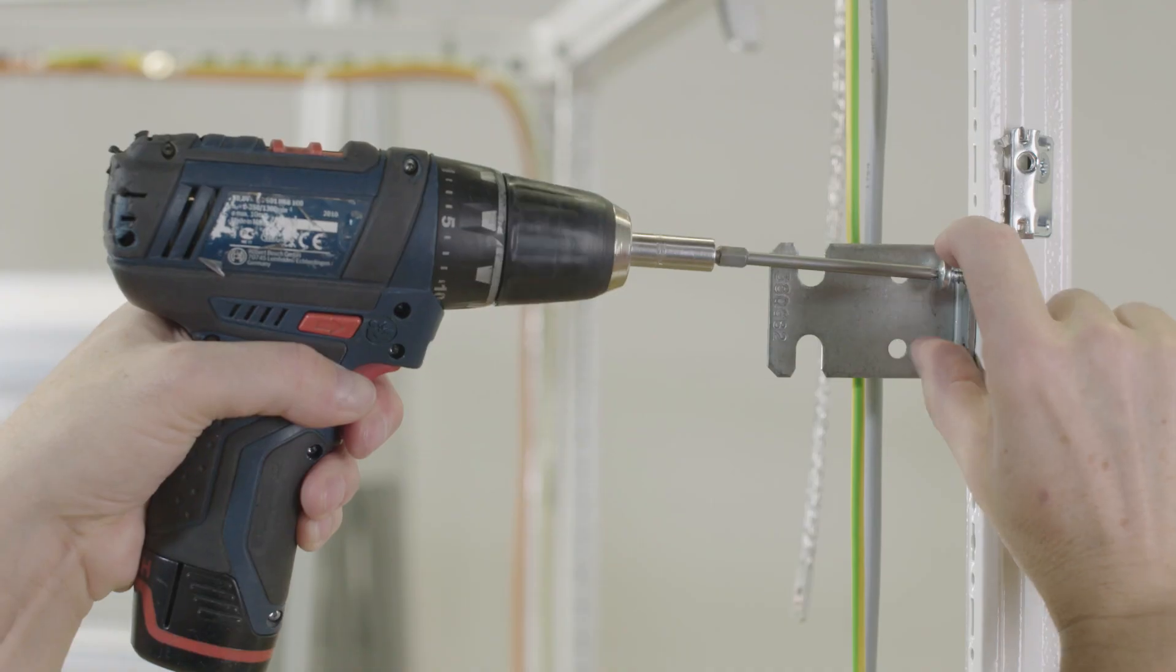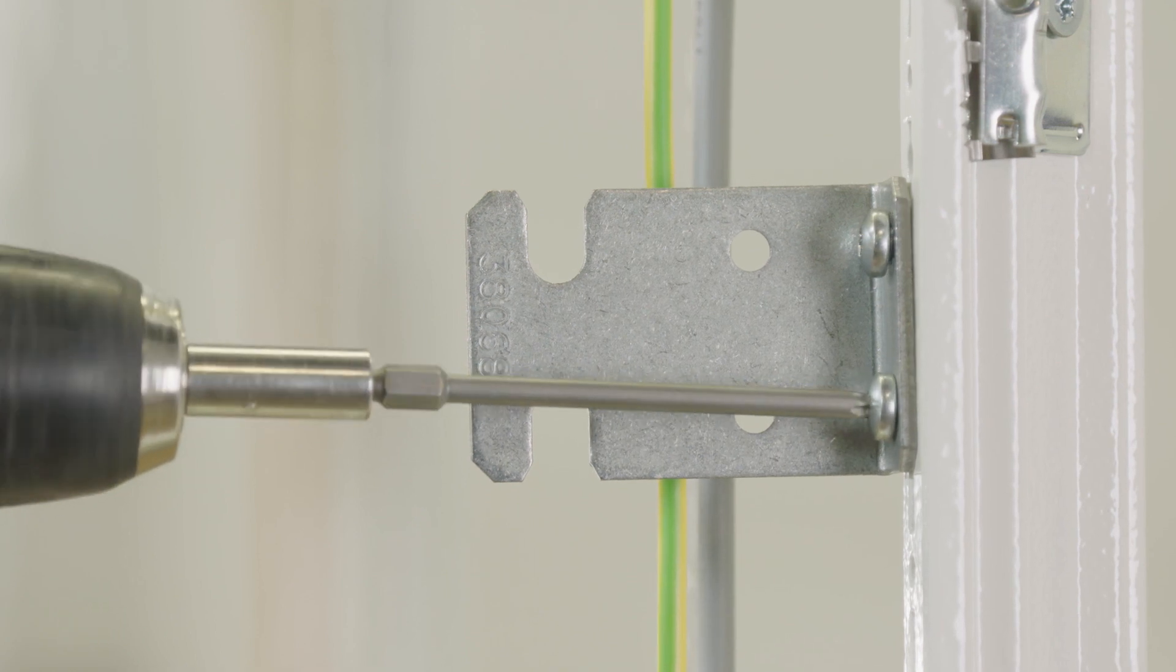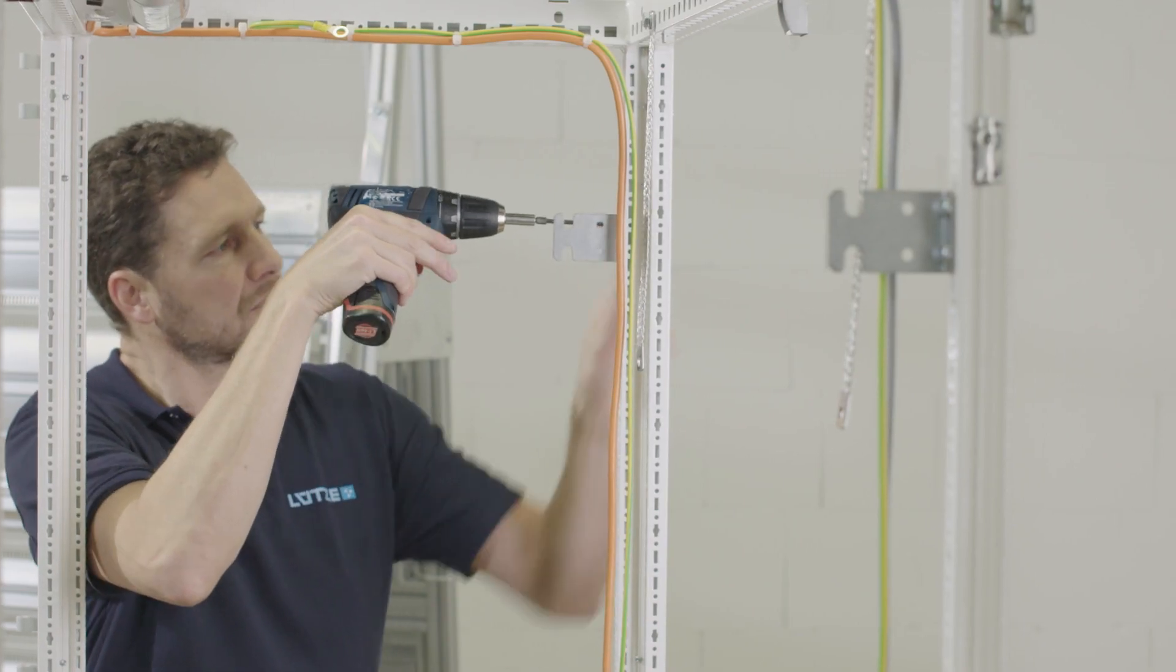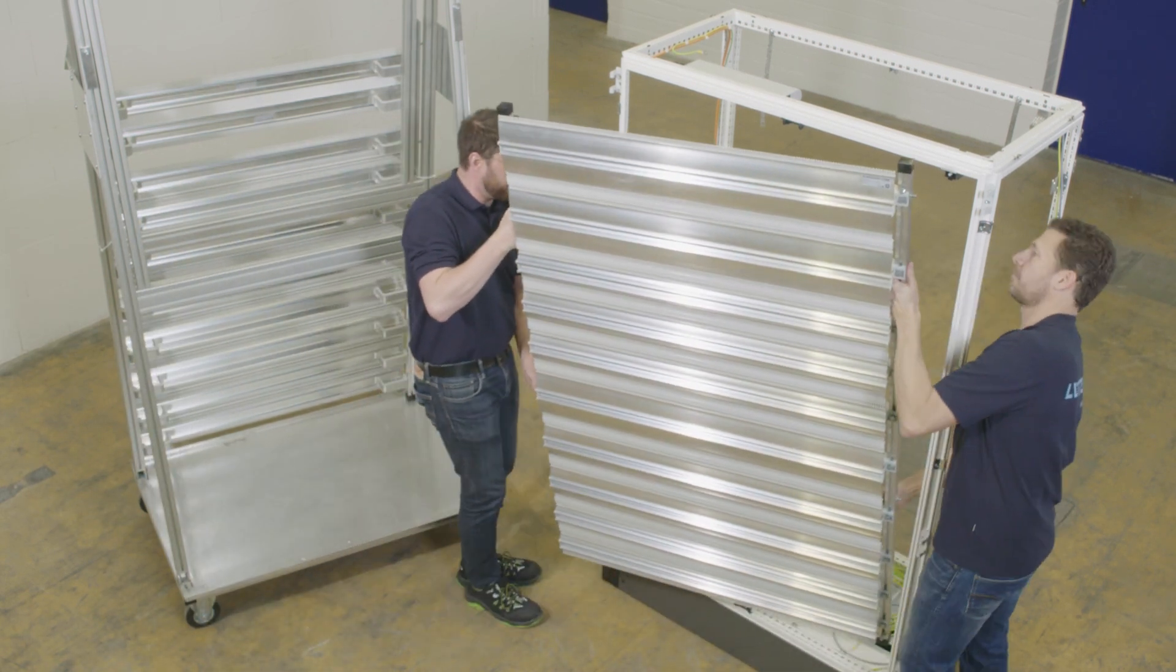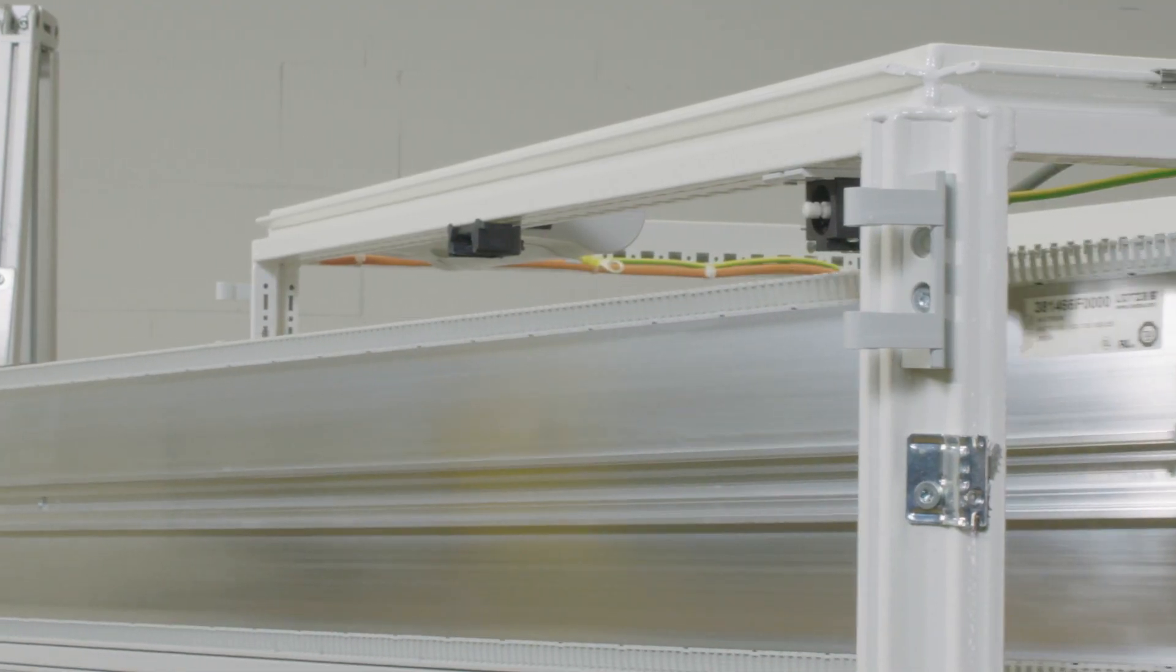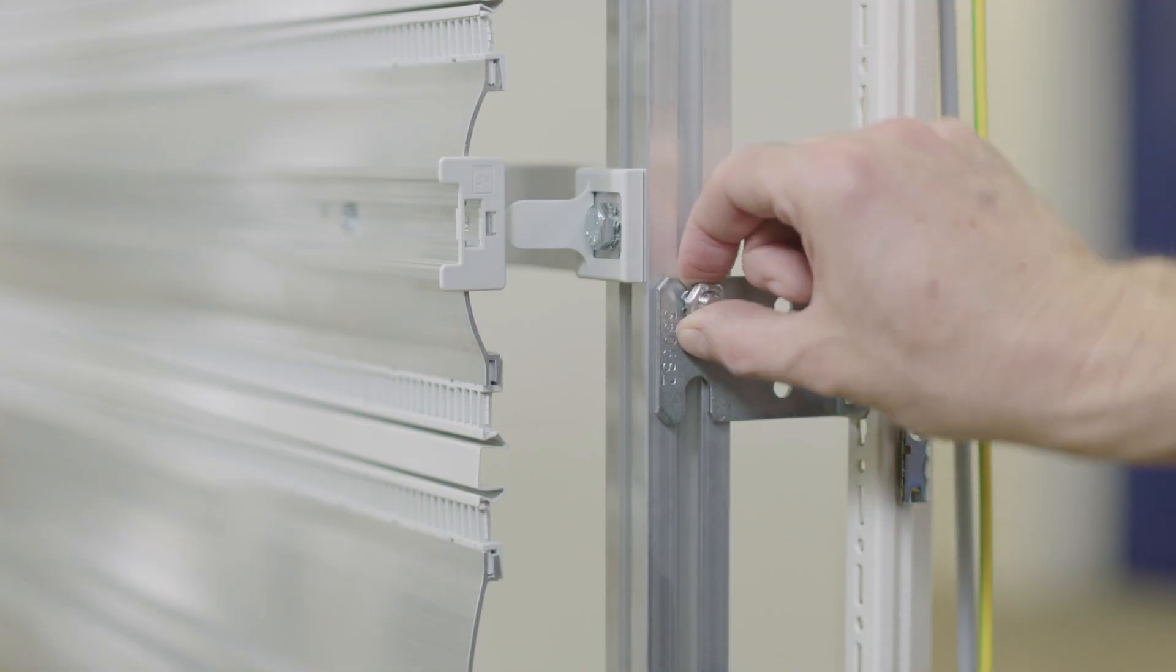The Lütze Airstream wiring system is compatible with all standard control cabinets. Appropriate installation kits are available for these cabinets. With the Airstream wiring system, the space in a control cabinet can be used more efficiently and at the same time a homogeneous enclosure climate can be created.